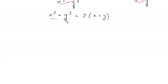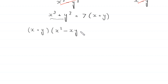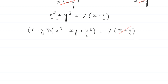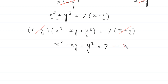Now x cubed plus y cubed can be factorized as x plus y times x squared minus xy plus y squared, giving x plus y times x squared minus xy plus y squared is equal to 7 times x plus y. Dividing both sides by x plus y, we are left with x squared minus xy plus y squared is equal to 7. Let us call this equation 5.